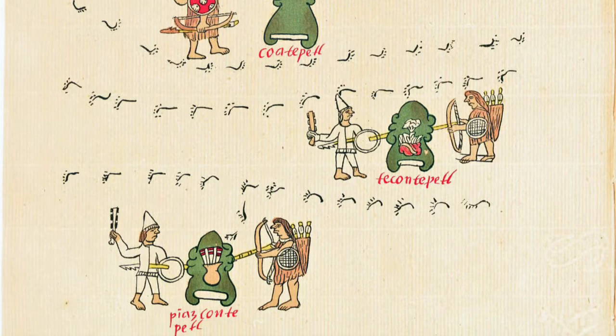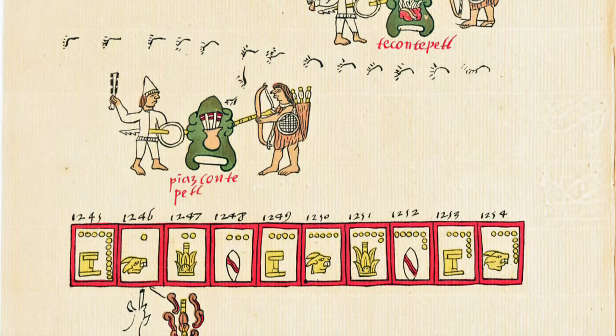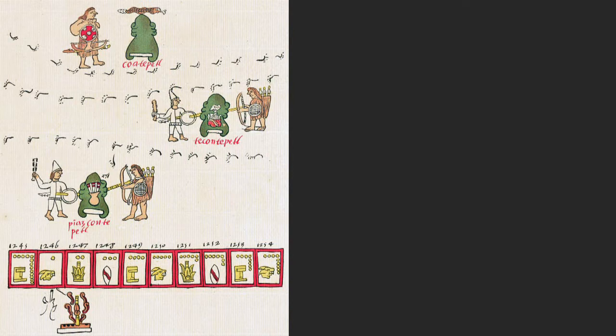Even a casual glance at the Nahuatl language would reveal a good number of words ending in tl, tli, or li. These are suffixes that mark a noun's absolutive form. Absolutive means that a Nahuatl noun takes subject prefixes and suffixes similarly to intransitive verbs — verbs without objects.